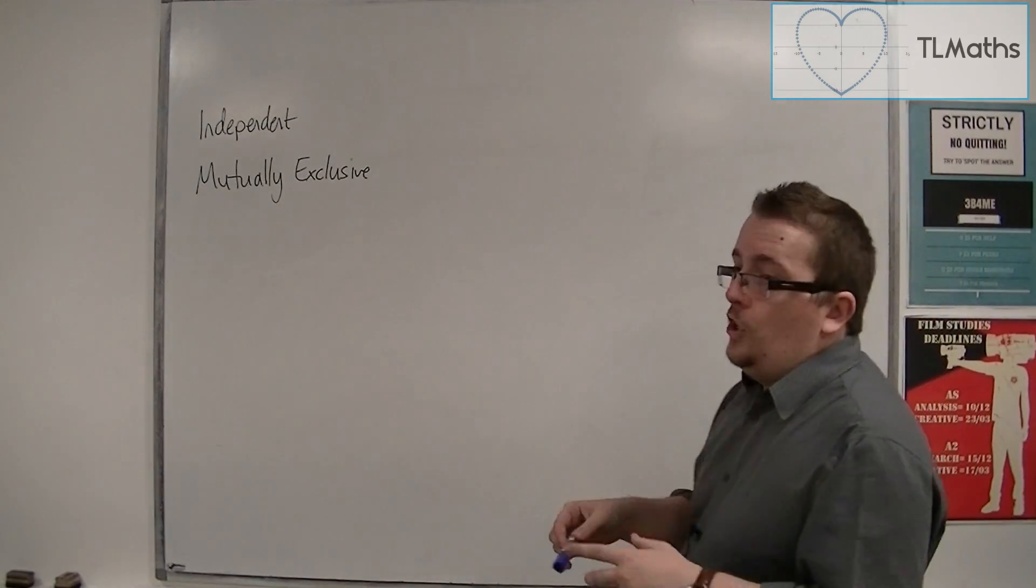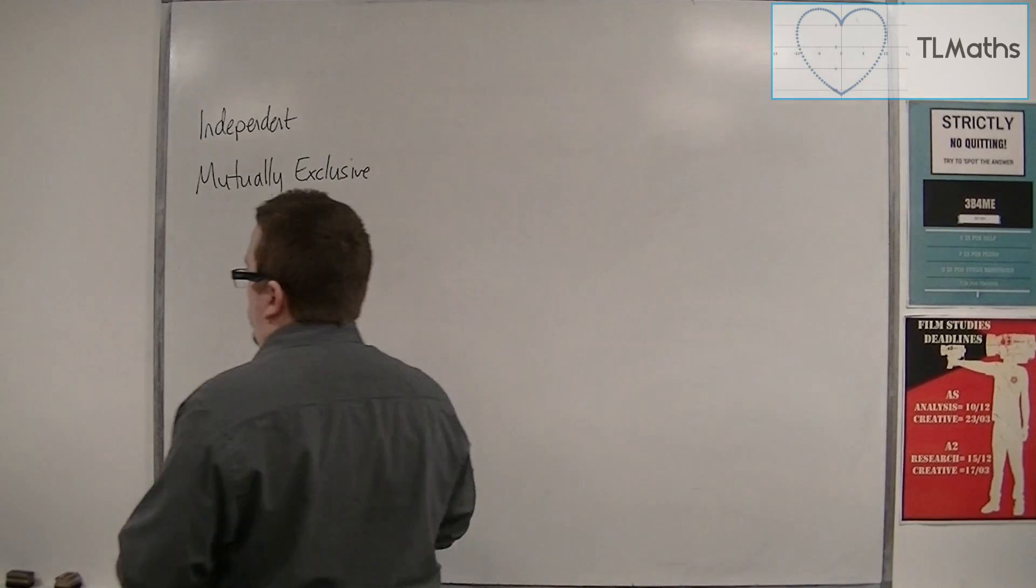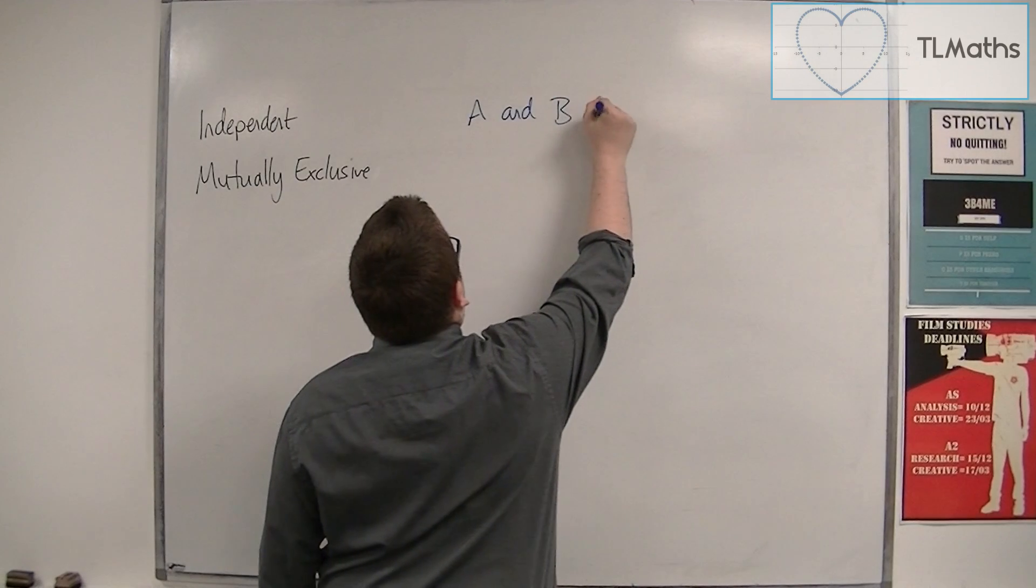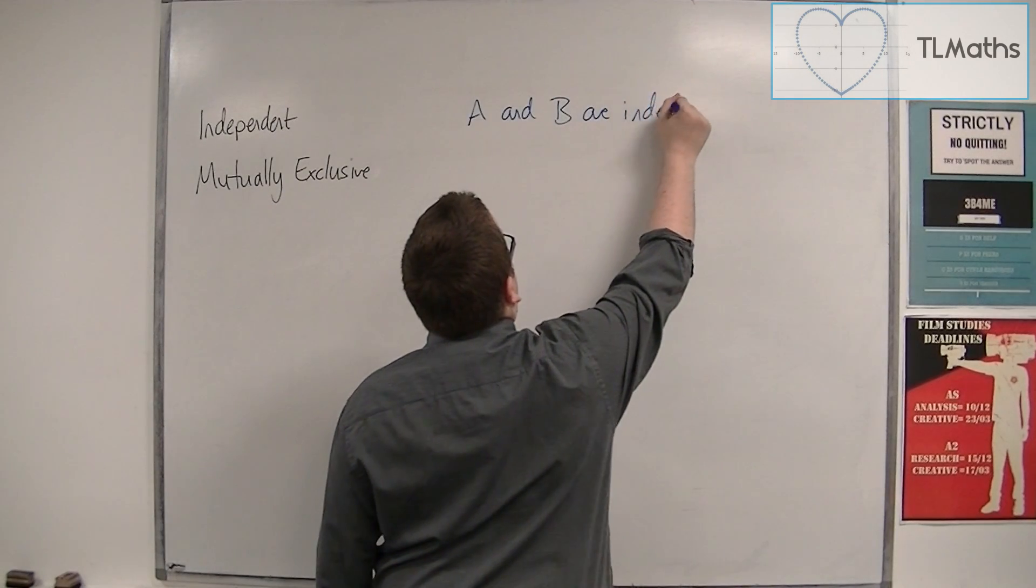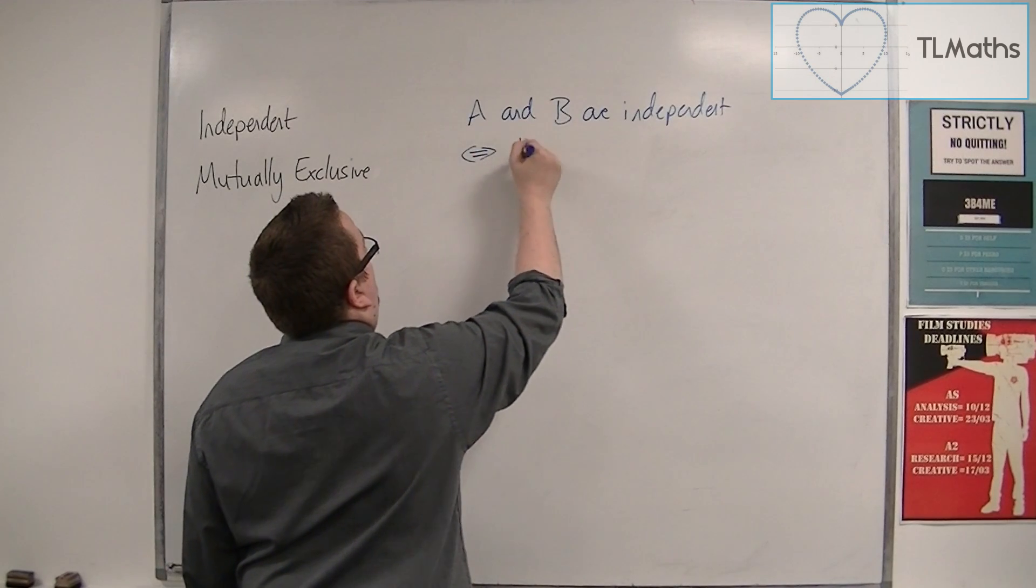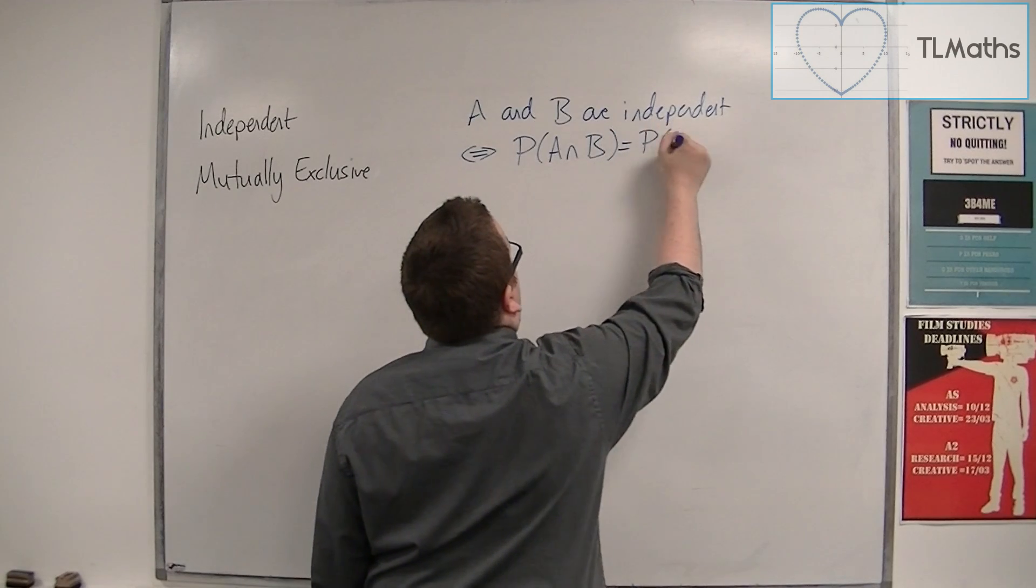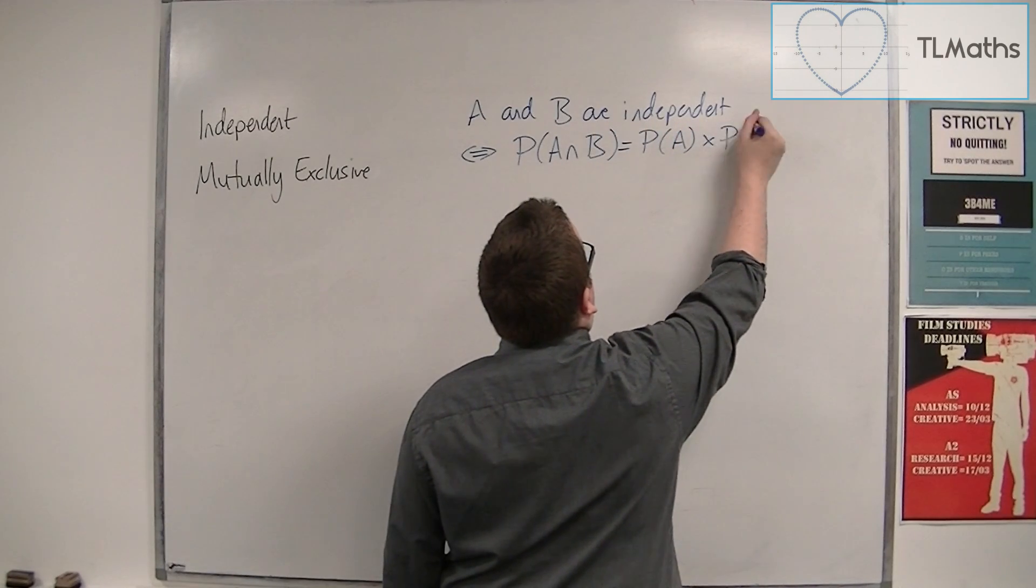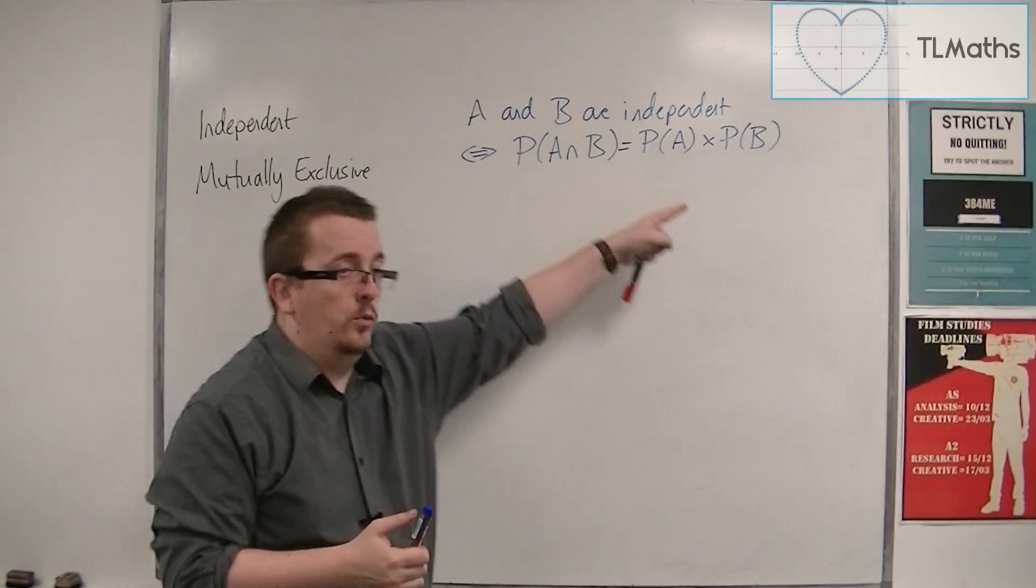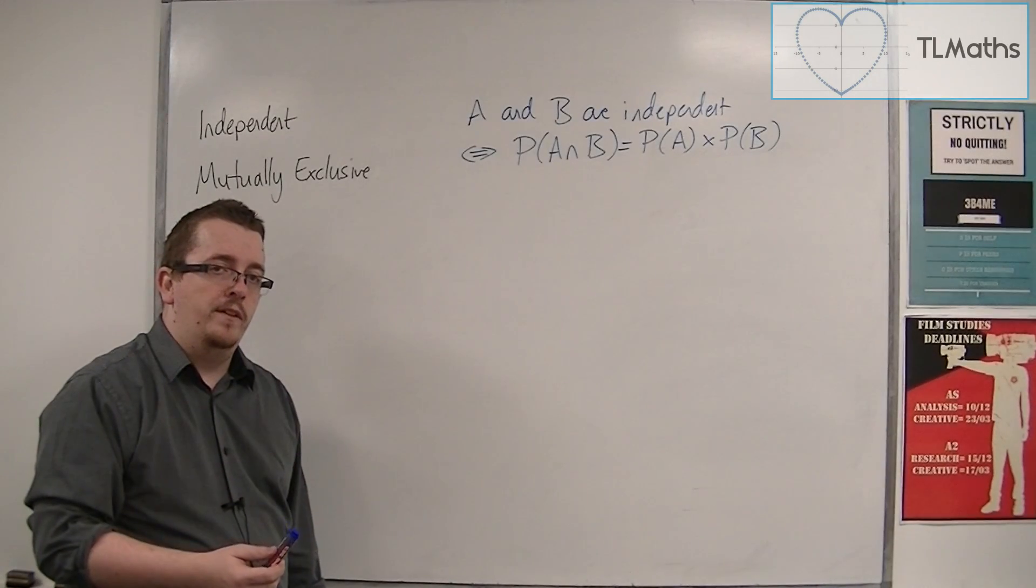Subsequently, if two events A and B are independent, then, if we write this formally, A and B are independent if and only if the intersection of A and B can be calculated by just multiplying the probability of A by the probability of B. If this holds, then the two events A and B are independent of one another.